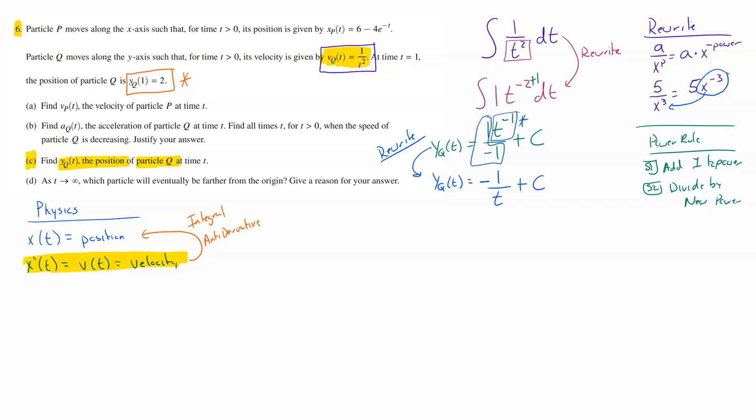Now we'll grab that initial value. So y sub q of 1 is equal to 2. What this is saying is when I plug in 1 for T, I need the answer to all of that math to equal 2. So y sub q of 1 is going to equal, I now plug in 1 for T. So on the bottom here, I'm going to plug in 1. That plus C all needs to equal my answer, which is 2.